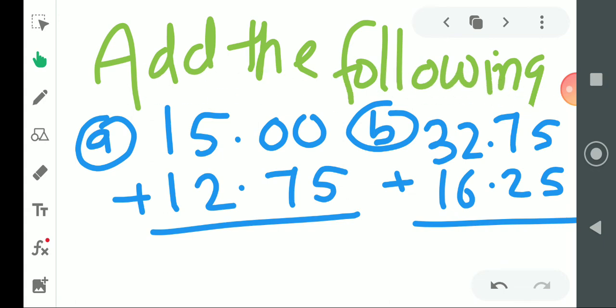Next, add the following. Students, pay attention. How to read this? Rs. 15.00 paise, Rs. 12.75 paise. I told you in the previous video that on the right side of the point are paise, on the left side of the point are rupees. Now we have to add. Students, it's very easy addition. Very simple addition you have to do.